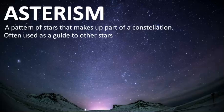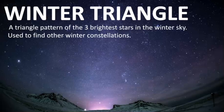Before we dive in and learn about the Winter Triangle, let's first learn about what an asterism is. An asterism is not a true constellation, but a pattern or group of stars that can be part of a constellation or a collection of constellations. The Winter Triangle is often called that because that's when you can see it in the Northern Hemisphere, and the triangle is the pattern that it makes in the sky.